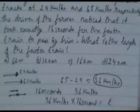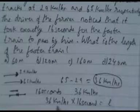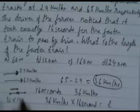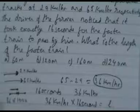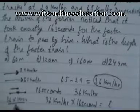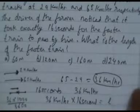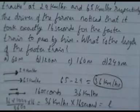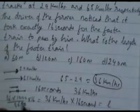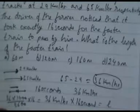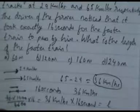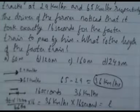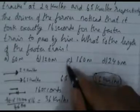Converting 36 km/h to m/s: 36 × 1000 / 3600 = 10 m/s. Length = 10 × 16 = 160 meters. So option C is correct.